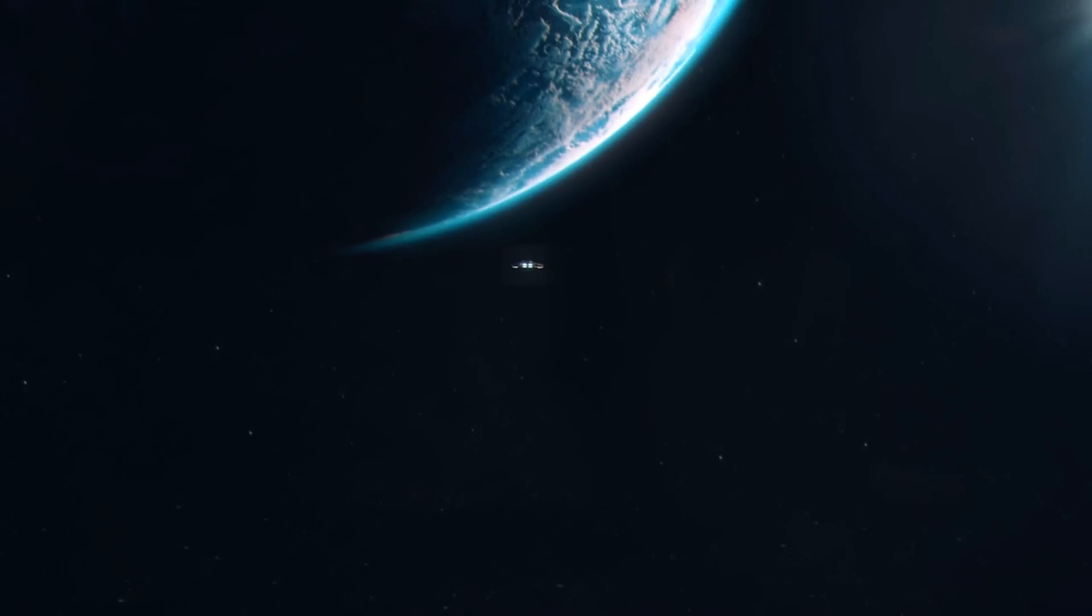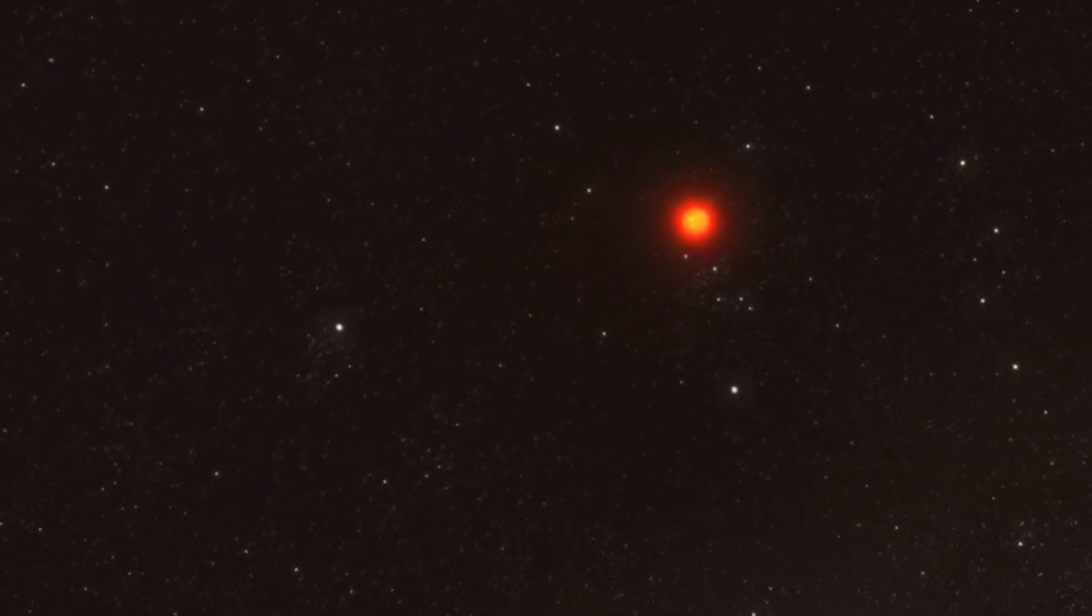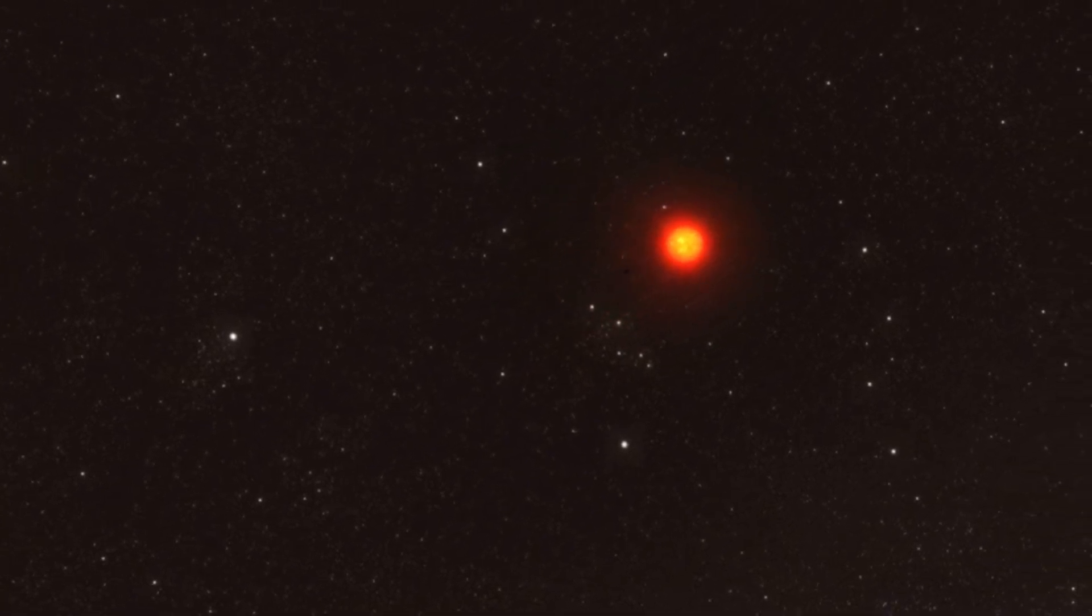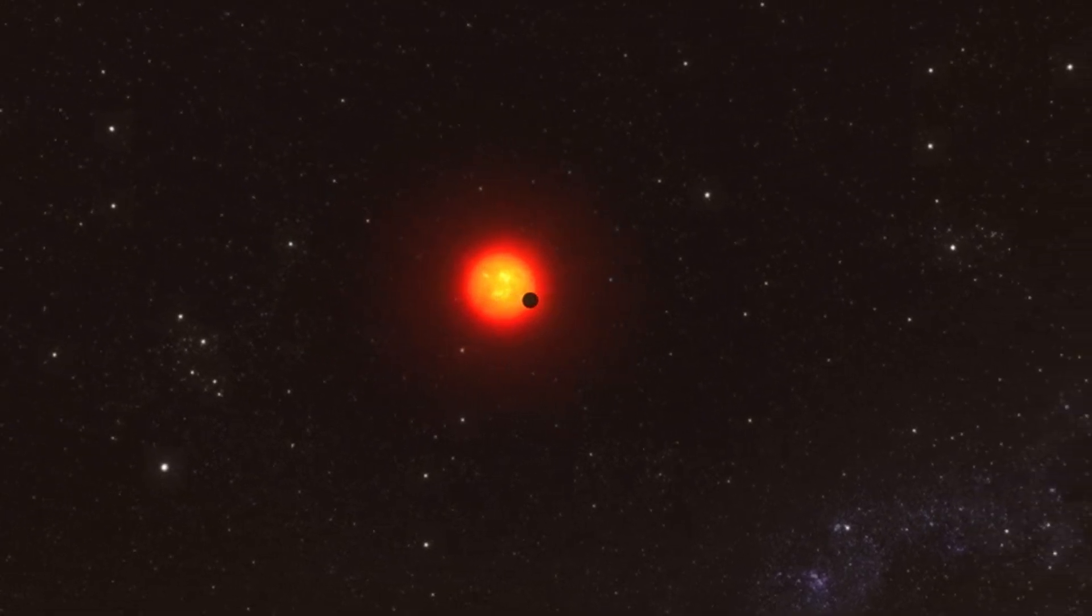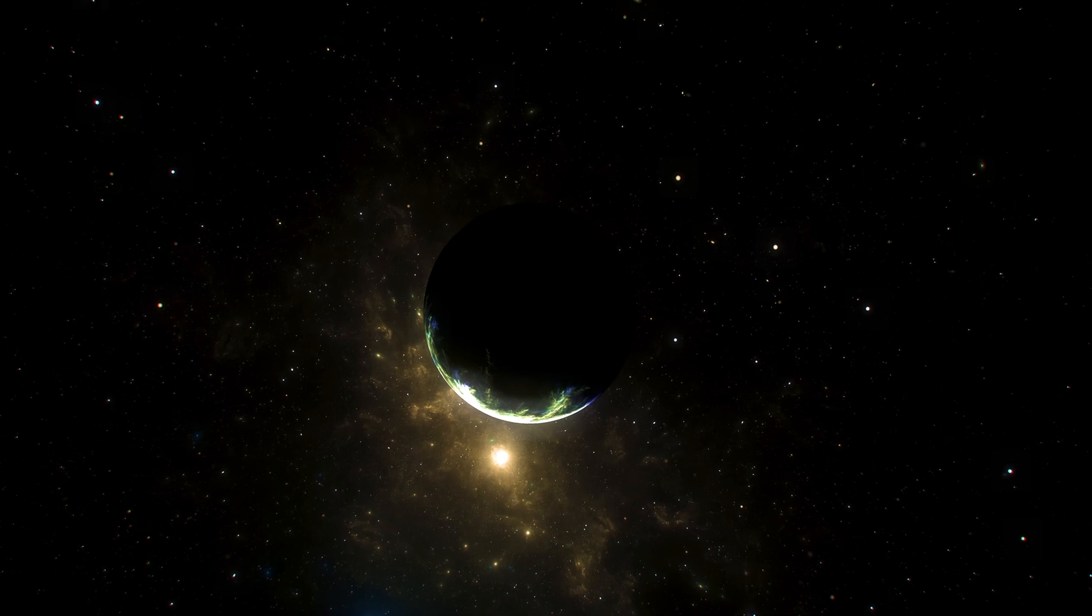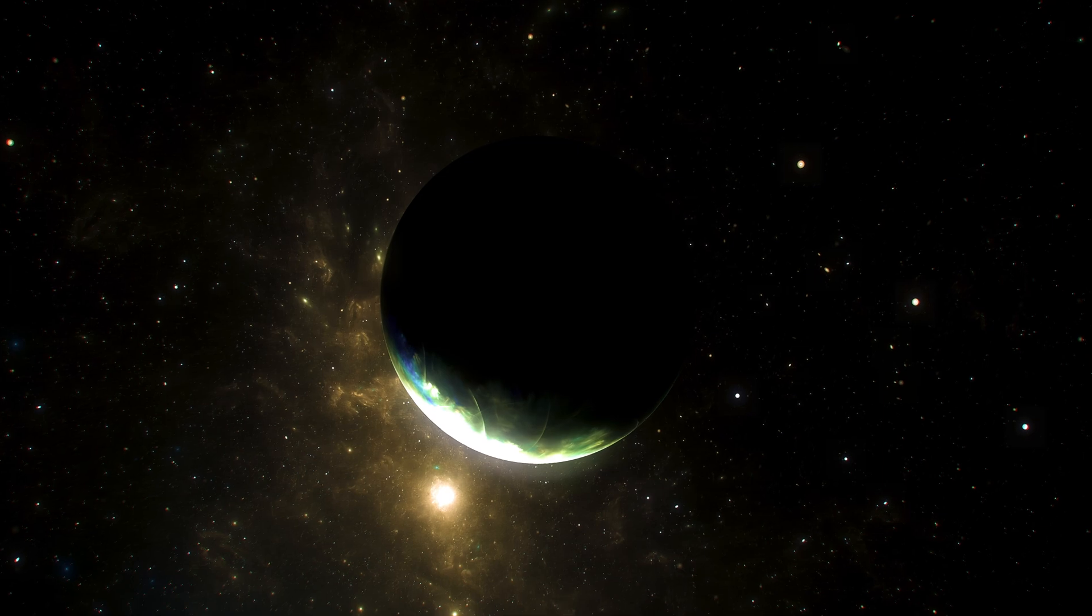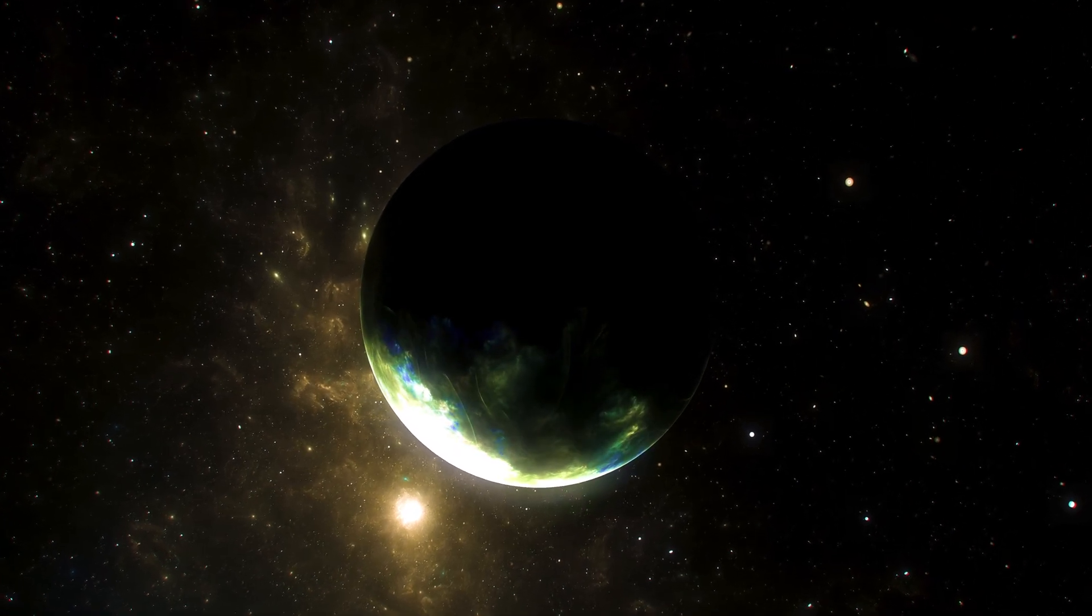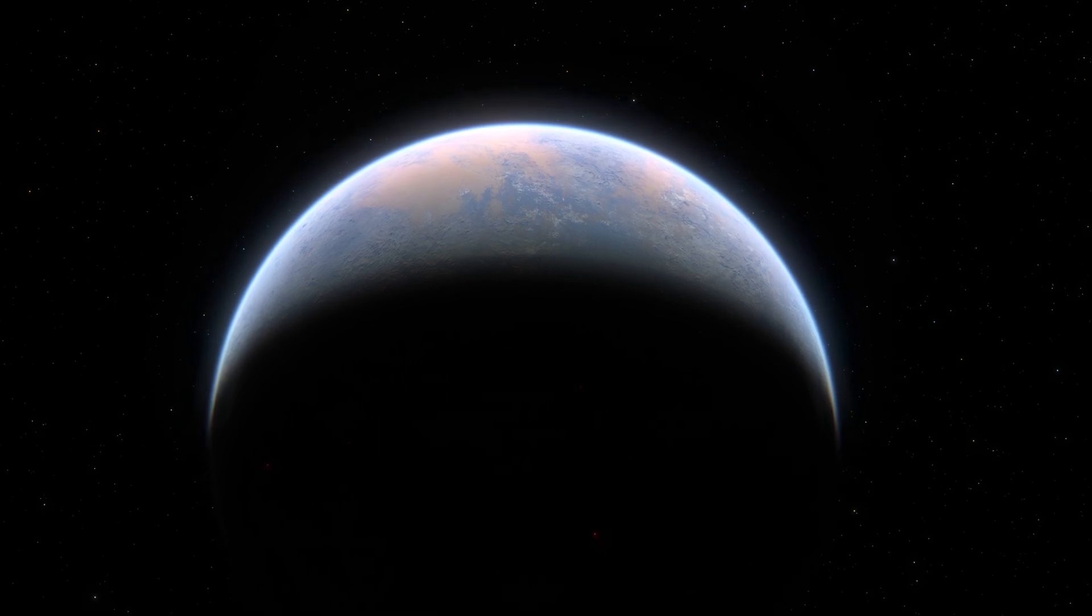The potential artificial lights on Proxima B's dark side suggest a level of technological advancement that could surpass our own. If these lights are indeed from a civilization, what's their purpose? Are they merely a means of survival? Or do they signify something more? Humanity's history is littered with examples of exploration turning into conquest. As we gaze at Proxima B, we must consider how advanced civilizations might perceive our own. If we've detected them, chances are they've noticed us as well. And given the fragile state of Earth's environment, would they see us as a civilization worth preserving? Or merely another obstacle in their path?